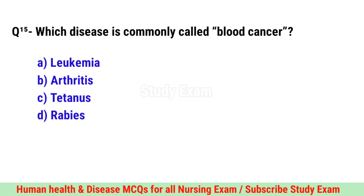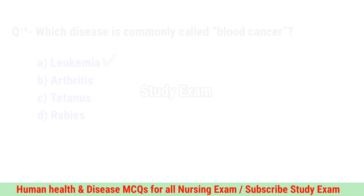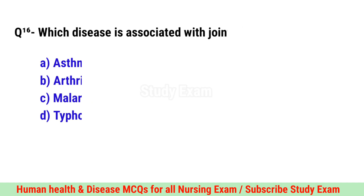Question No. 15. Which disease is commonly called blood cancer? Correct option is A. Leukemia.